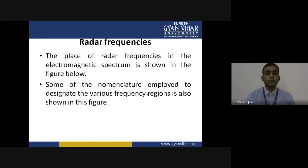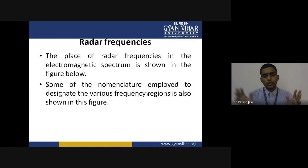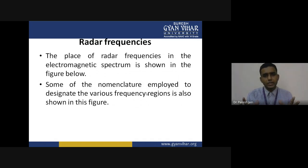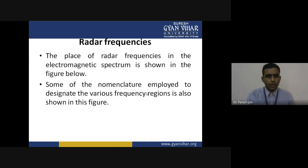The place of radar frequencies in the electromagnetic spectrum is shown in the figure. In the electromagnetic spectrum we have a particular designation of radar bands assigned by the ITU and IEEE. These radio wave bands are known as radar bands or radar frequency bands and are specified at a particular band in the electromagnetic spectrum. Some of the nomenclature employed to designate the various frequency regions is also shown in this figure.